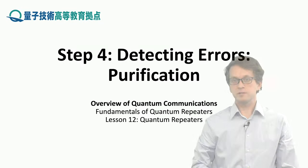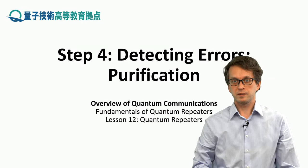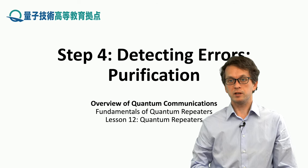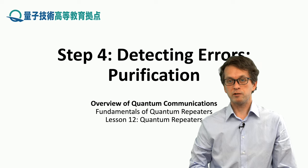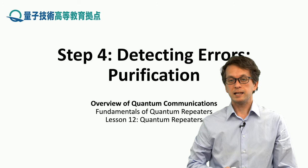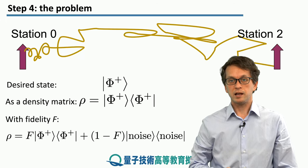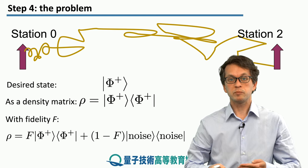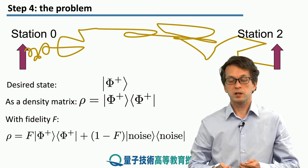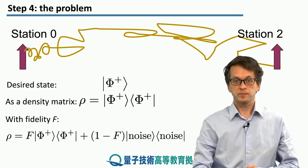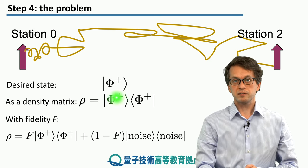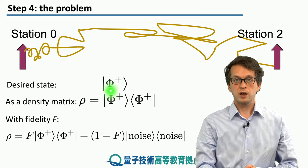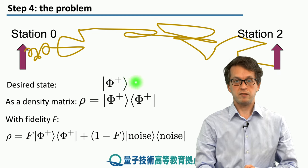Step 4: Detecting errors and purification. In this step we will address what happens when we also include errors into our considerations, and how we can handle them and create a state between station 0 and station 2 that's of acceptable quality. Our desired state that we want to share between station 0 and 2 is given by the maximally entangled state phi plus.